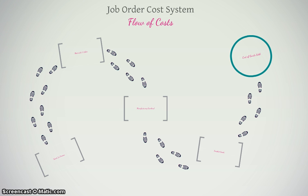For instance, if you were a print shop making graduation invitations or wedding invitations, each order that came in would be a little bit different. They might all be wedding invitations, but the bride and groom probably are not going to be the same, the date is not going to be the same, the design is not going to be exactly the same. There will be differences between each order, so they would use a job order cost system to account for the costs of those jobs.